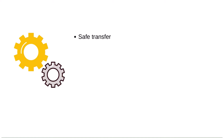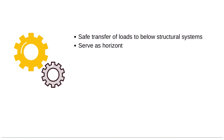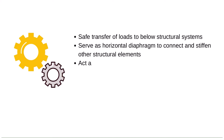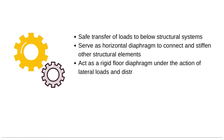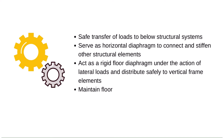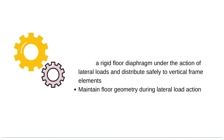Features of Slab System in RCC Building Structures. A slab system or floor system possesses the following features: safe transfer of loads to the below structural system; serve as a horizontal diaphragm to connect and stiffen other structural elements; act as a rigid floor diaphragm under the action of lateral loads and distribute safely to vertical frame elements; and maintain floor geometry during lateral load action.